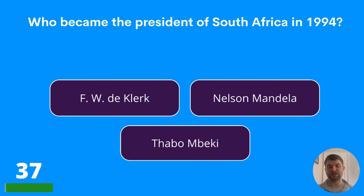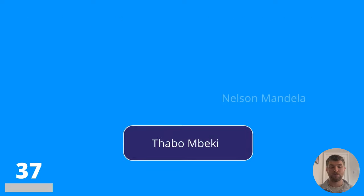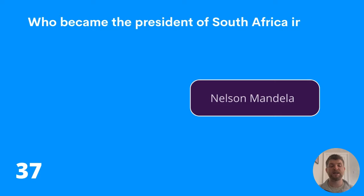Question thirty-seven: who became the President of South Africa in 1994? F.W. de Klerk, Nelson Mandela, or Thabo Mbeki? The answer is Nelson Mandela.